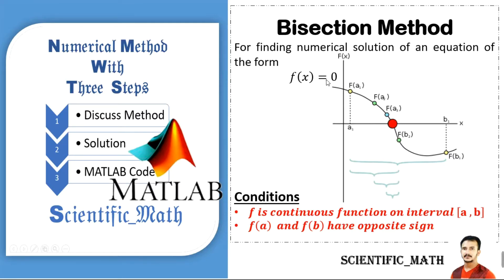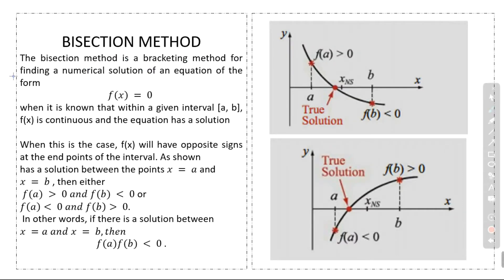We have a bisection method for finding the numerical solution of an equation of the form f(x) = 0. The conditions for the bisection method are: f is a continuous function on interval [a, b], and f(a) and f(b) have opposite signs. The bisection method is a bracketing method for finding a numerical solution when f(x) is continuous on [a, b].